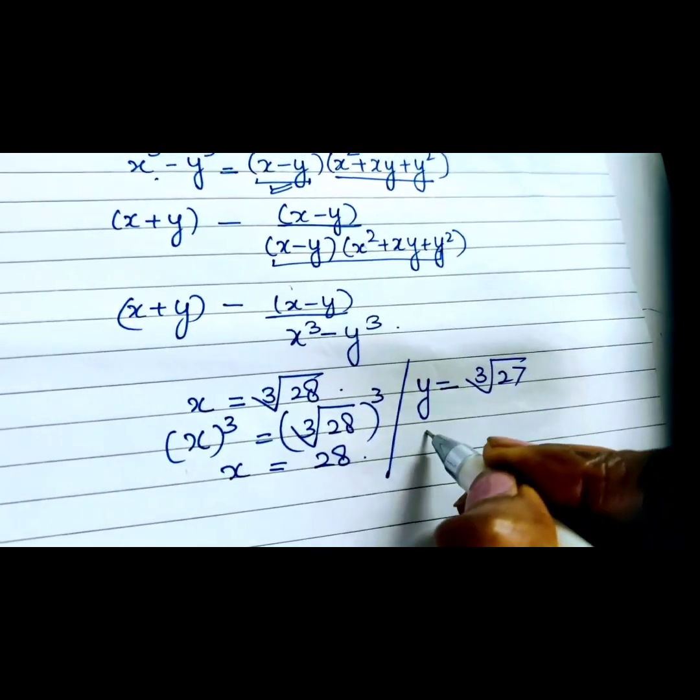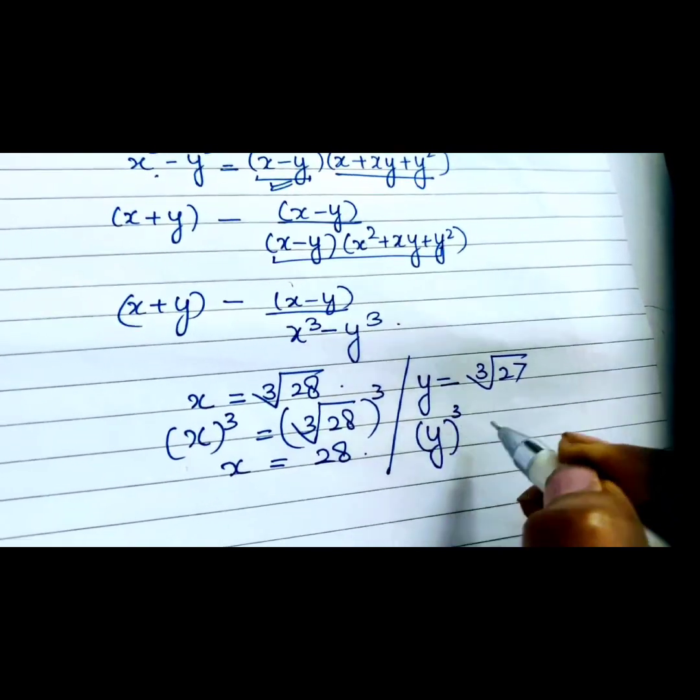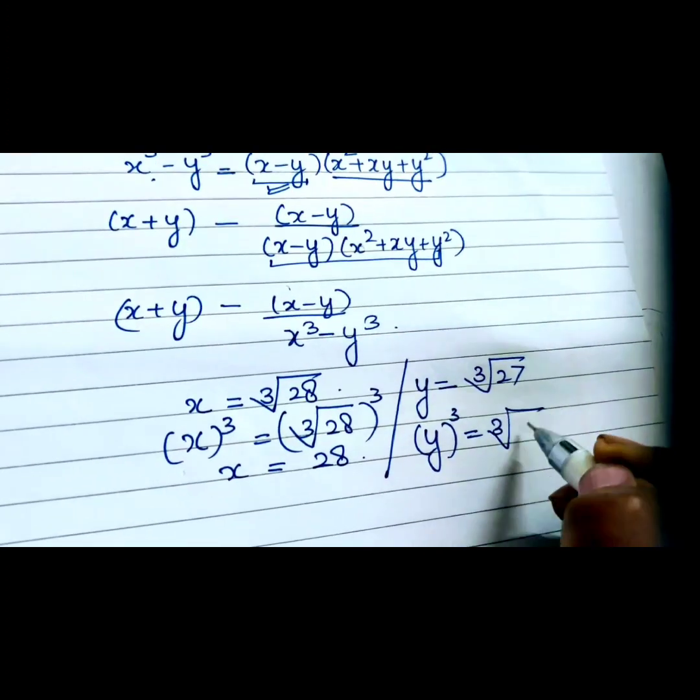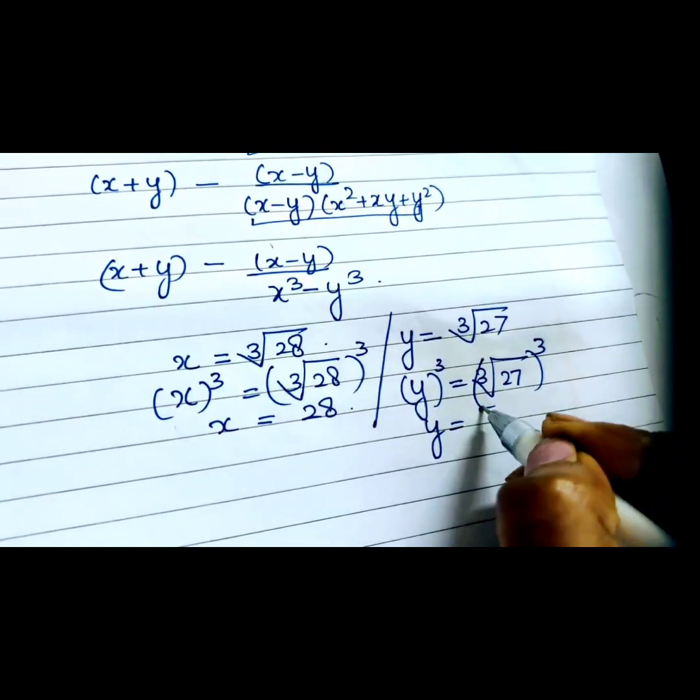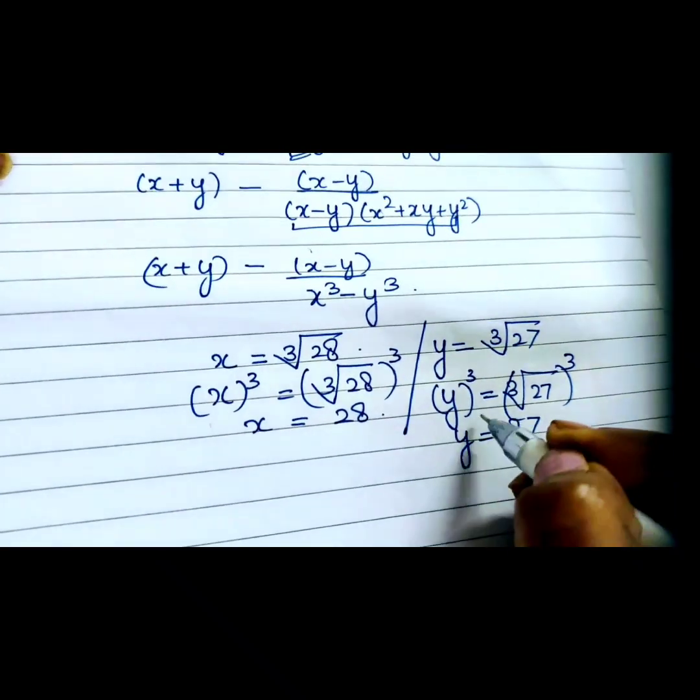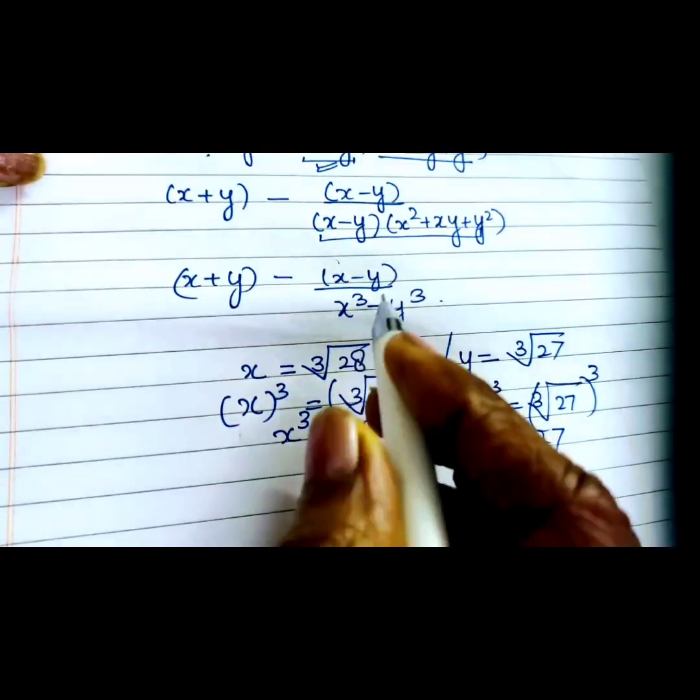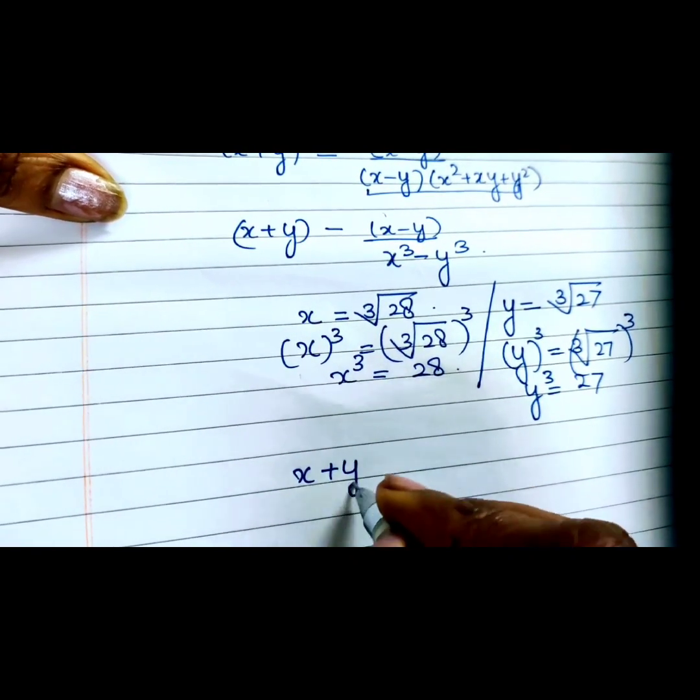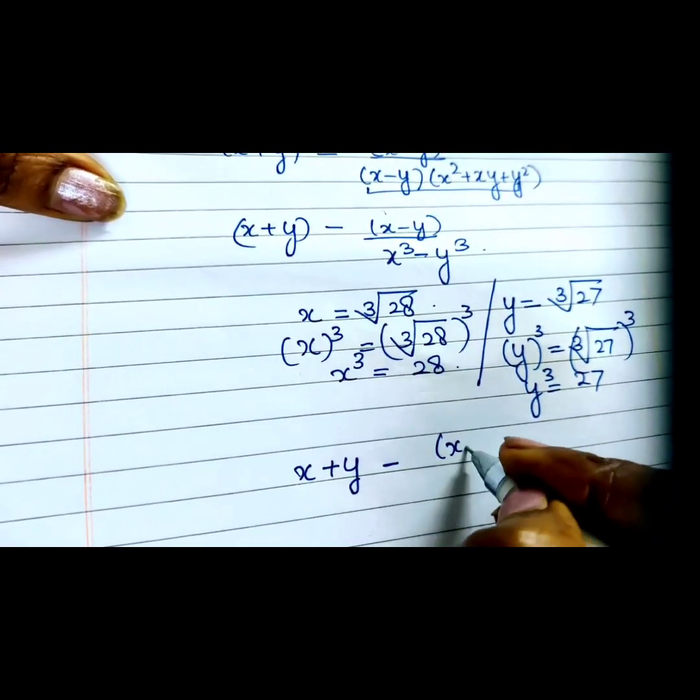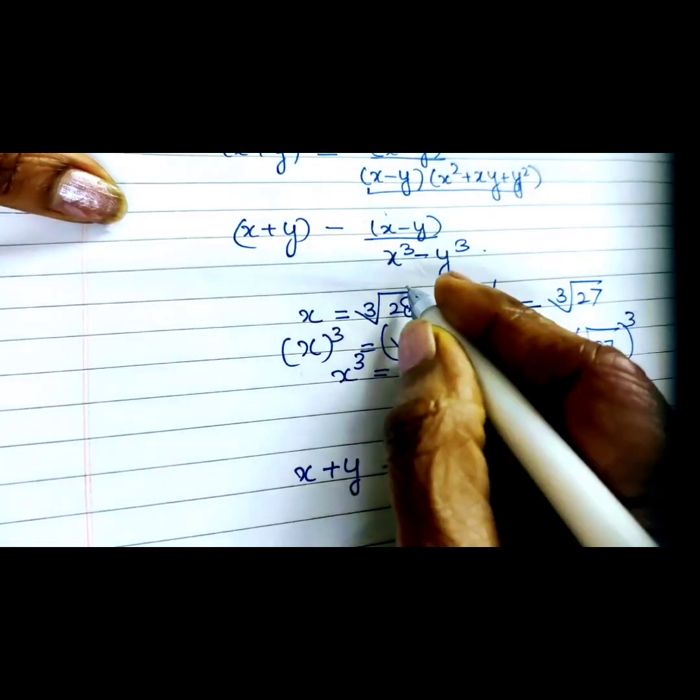y³ will become 27 because y is given as the cube root of 27. Now put the values here: this will be (x + y) - (x - y) over x³